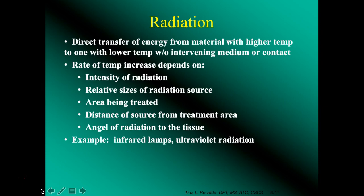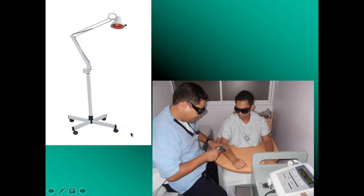Radiation is the direct transfer of energy from a material with higher temperature to one with lower temperature without an intervening medium or contact. The rate of temperature increase depends on the intensity of the radiation, the relative sizes of the radiation source and treatment area, the distance of the source from the treatment area, and the angle of radiation to the tissue. We rarely use these, but examples include infrared lights and ultraviolet radiation. Because these may appear on your boards, you should read about them, but they will not be on this first exam. We will be doing some laser work later, which is also relevant here.